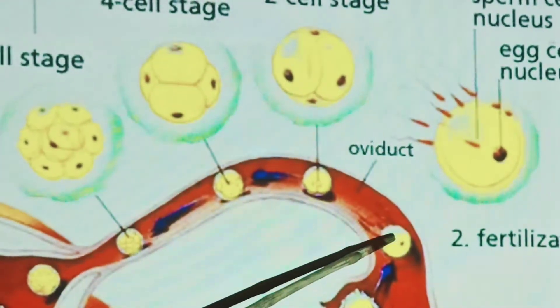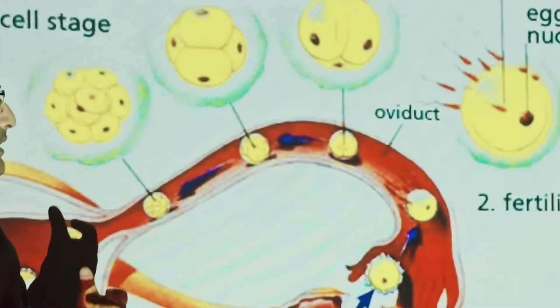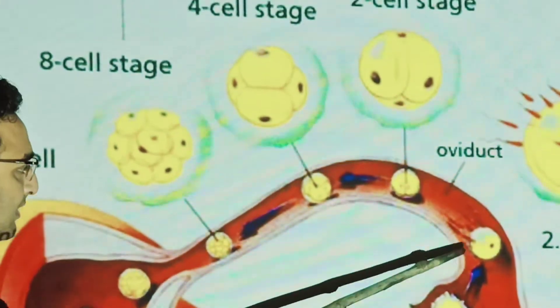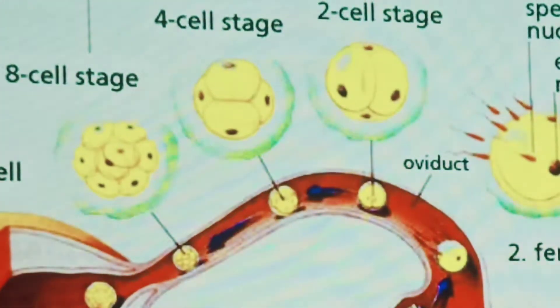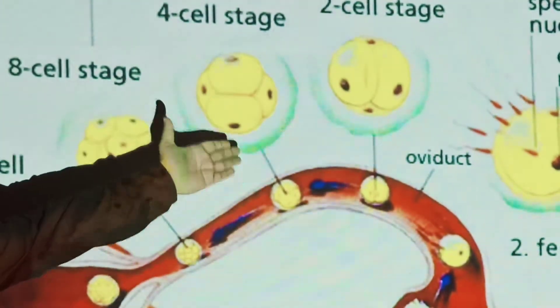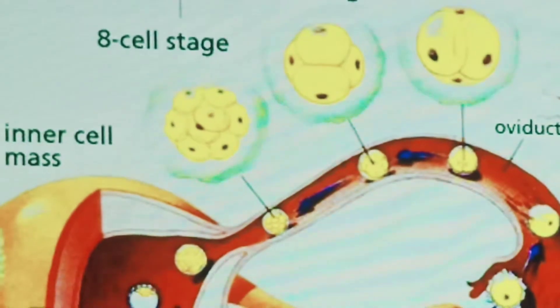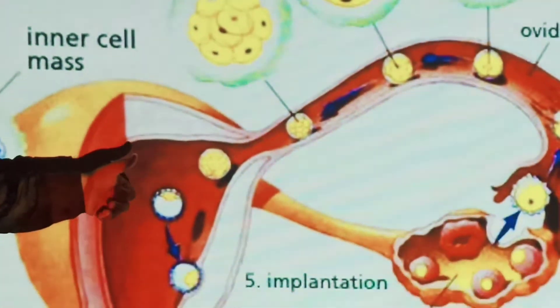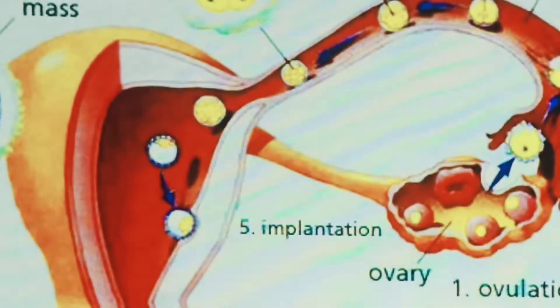And after this fertilization, that zygote further develops and divides into a different number of cells. Then first of all the zygote divides, it forms embryo. Two-cell stage embryo, further on it forms four-cell stage embryo, then eight-cell stage embryo. And this eight-cell stage embryo becomes that blastocyst.